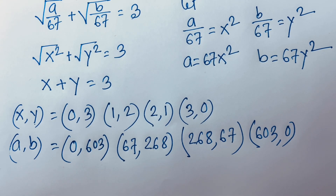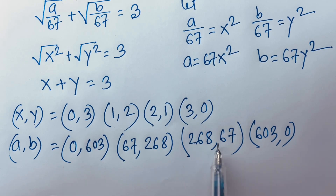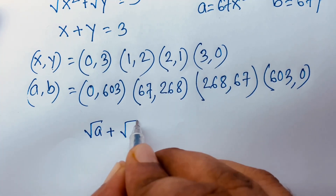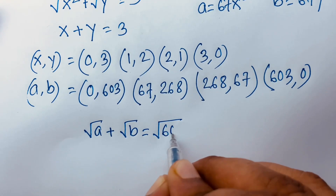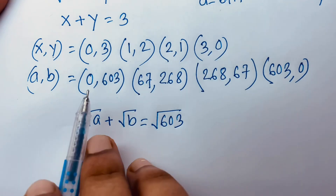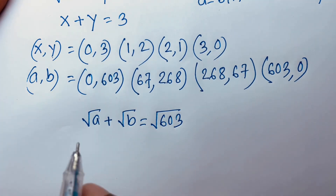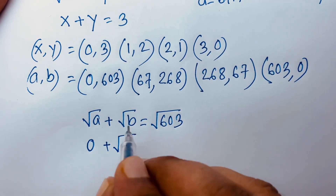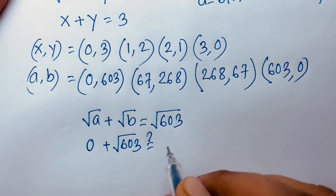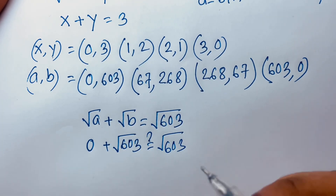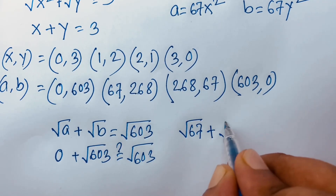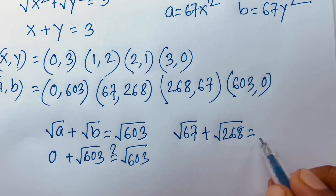So we find the values: (a, b) = (0, 603), (67, 268), and their swaps (268, 67), (603, 0). These are the same pairs. We'll now prove our answer. For a equals 0 and b equals 603: square root of 0 plus square root of 603 equals square root of 603. That checks out.